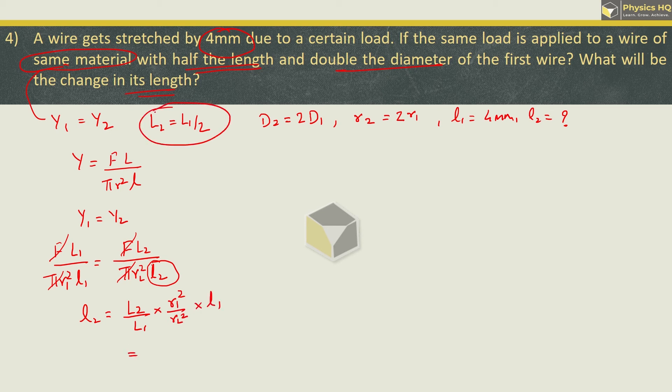Now we are given that second wire's length is half of the first one. So in place of L2 we can write L1 by 2. And in place of r2 we can write 2 times r1. So l1 into delta l1 we can write 4 mm, so 4 into 10 raised to minus 3 meter. Now L1 will cancel. This r1 square will also cancel. What we are left with is delta l2 is equal to 1 by 2. Here 1 by 2 squared will become 1 by 4.